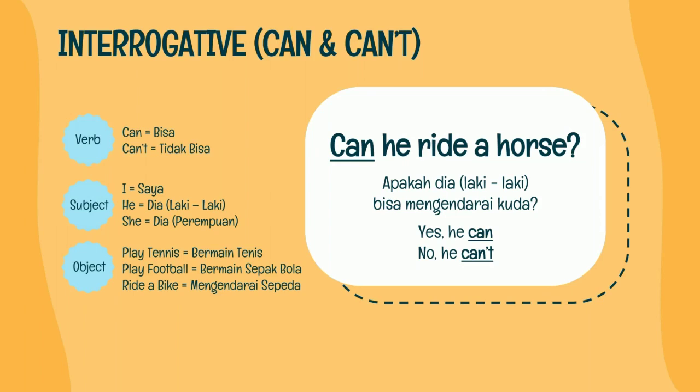Untuk interrogative, subjectnya kita pindahkan ke posisi kedua, verbnya ke posisi pertama. Artinya: apakah dia bisa mengendarai kuda? Kalau dia bisa, jawabnya: Yes, he can. Kalau tidak bisa, jawabnya: No, he can't.